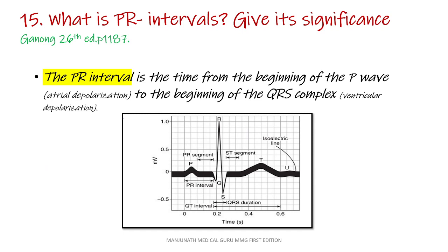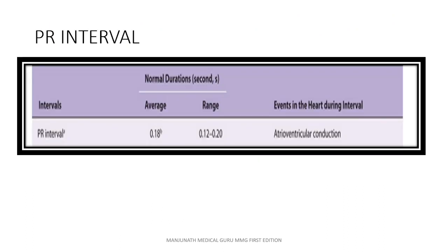Question number 15: What is the PR interval? Give its significance. The answer is taken from Ganong 26th edition, page number 1187. The PR interval is the time from the beginning of the P-wave — atrial depolarization — to the beginning of the QRS complex, that is ventricular depolarization. The PR interval has a normal duration of average 0.18 seconds, ranging from 0.12 to 0.2 seconds. It signifies atrio-ventricular conduction.